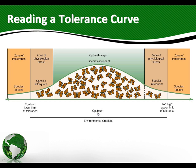For whatever environmental factor you're looking at — it could be temperature, amount of water, the amount of phosphorus available, the amount of nitrogen available — whatever the abiotic factor is, every species has an optimum range. What that means is that more organisms can exist and survive in that area than in the other zones of stress.